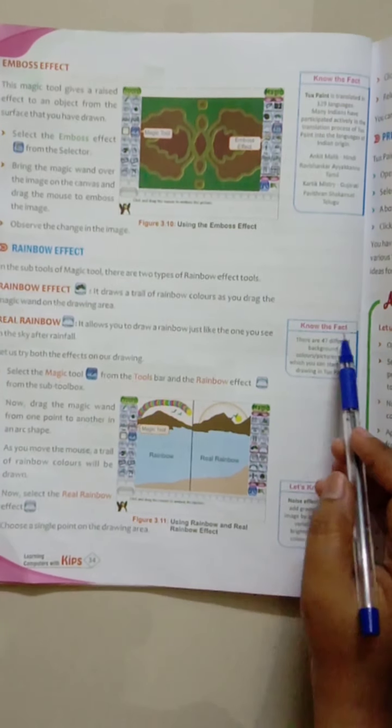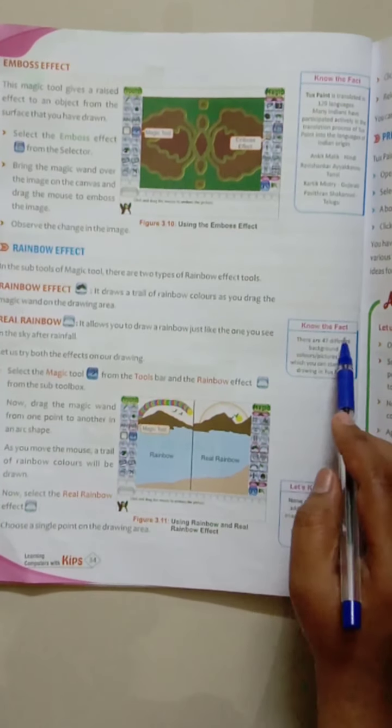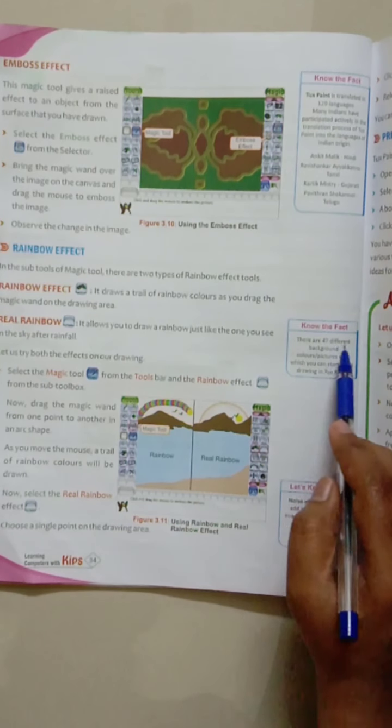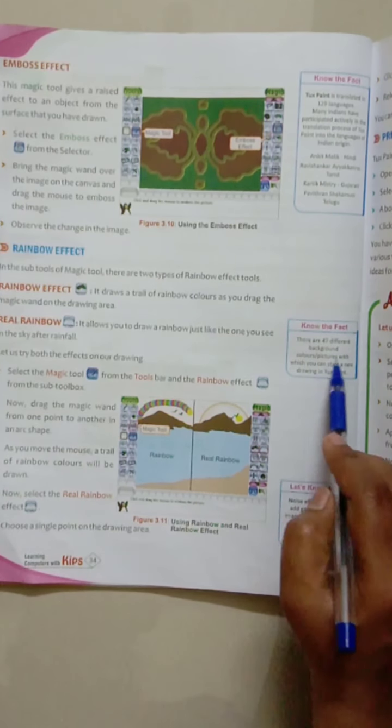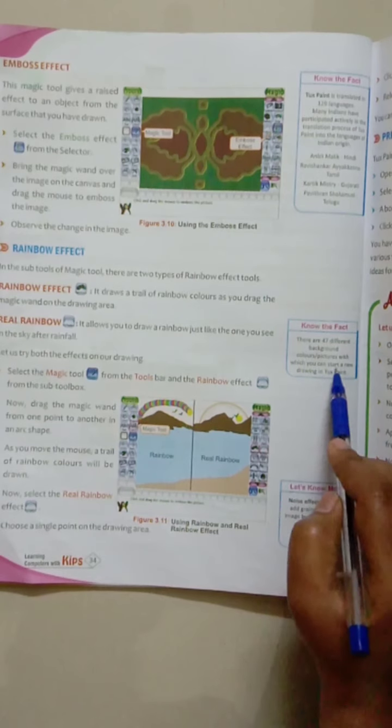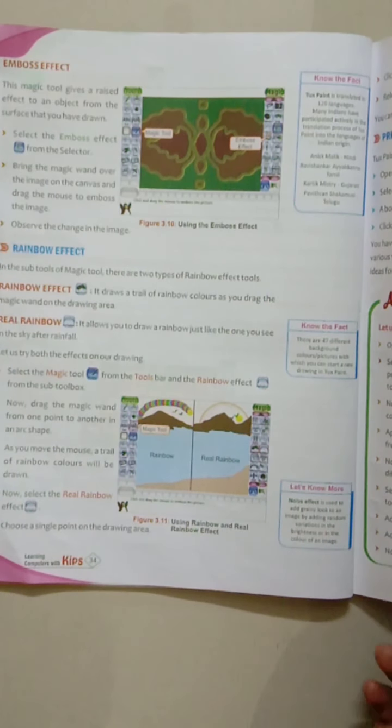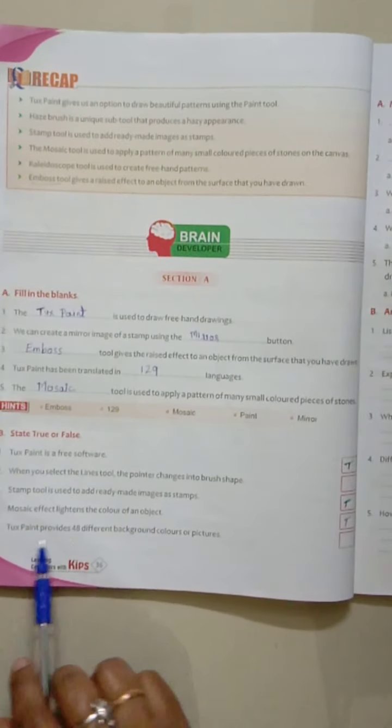In page number 34, they have given a 'Know the Fact'. There are 47 different background colors and pictures with which you can start a new drawing in Tux Paint. So this given statement is wrong.